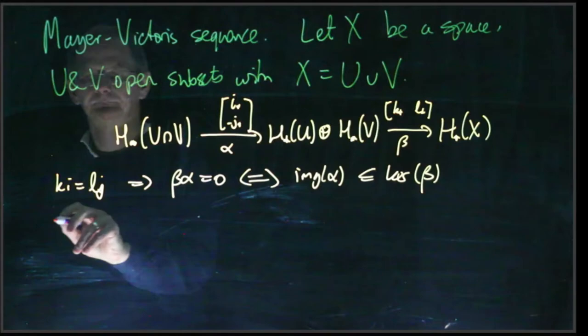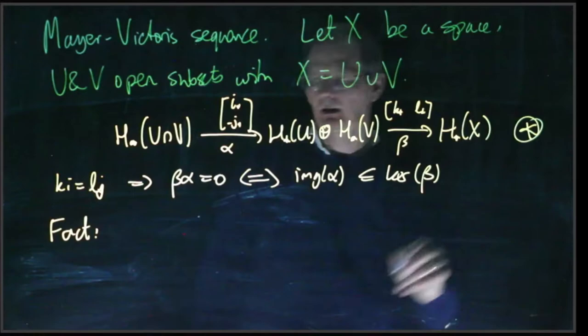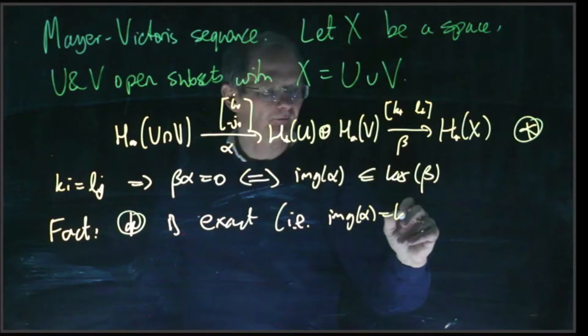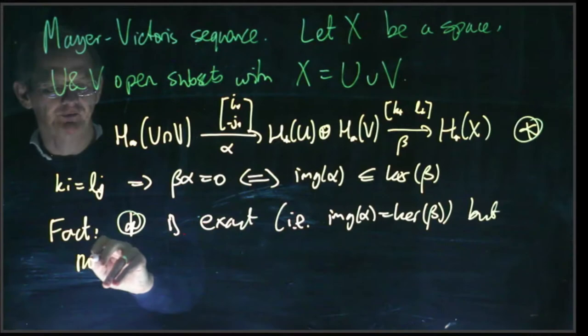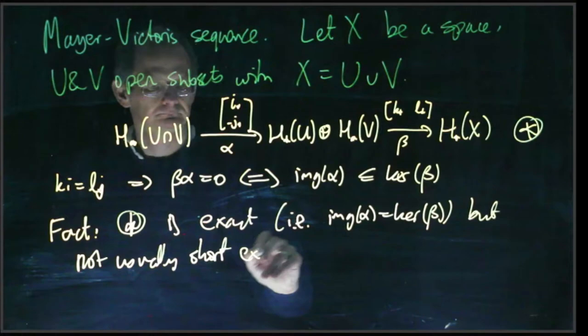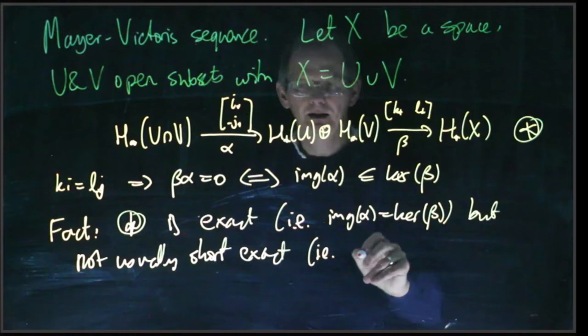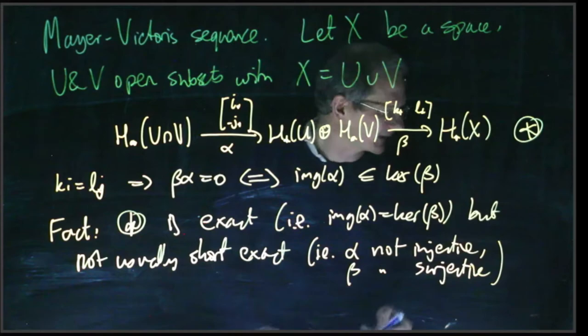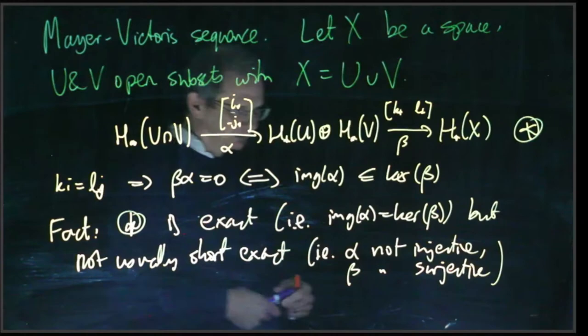It's a fact that the sequence star is exact, i.e. the image of alpha is equal to the kernel of beta, but not usually short exact. In other words, alpha is not injective and beta is not surjective. At least they might be in particular cases, but not in general.